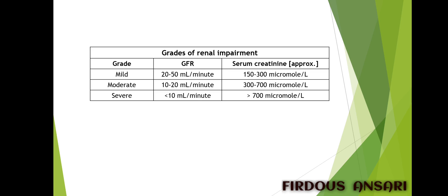There are grades of renal impairment. Renal impairment is mild when the glomerular filtration rate is in the range of 20 to 50 mL per minute and serum creatinine is approximately 150 to 300 micromoles per liter. Renal impairment is moderate when the GFR is less than 10 mL per minute and serum creatinine is more than 700 micromoles per liter. Renal impairment is severe when the GFR is less than 10 mL per minute and serum creatinine is more than 700 micromoles per liter. Serum creatinine levels are checked to measure GFR and accordingly dosing can be given to the patient.